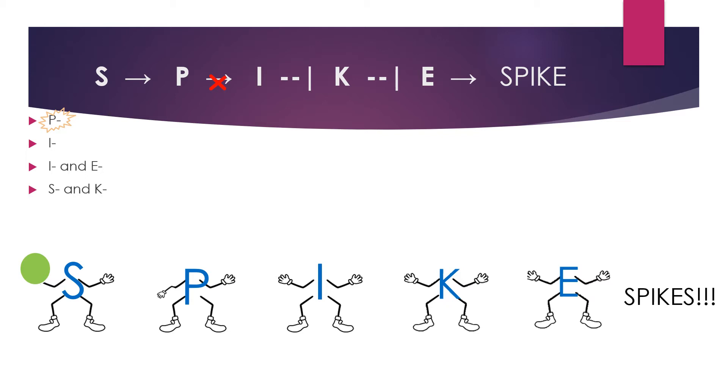For our first example, we will look at the pathway with the mutation in protein P. When this happens, P is not able to produce I. Where I is needed in order to block K, K consequently blocks E. This prevents the production of spikes.